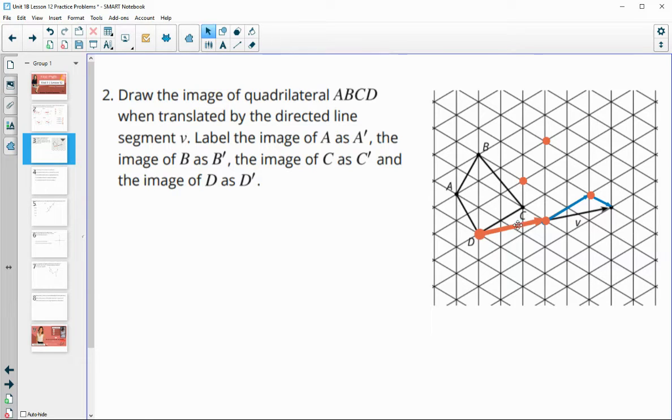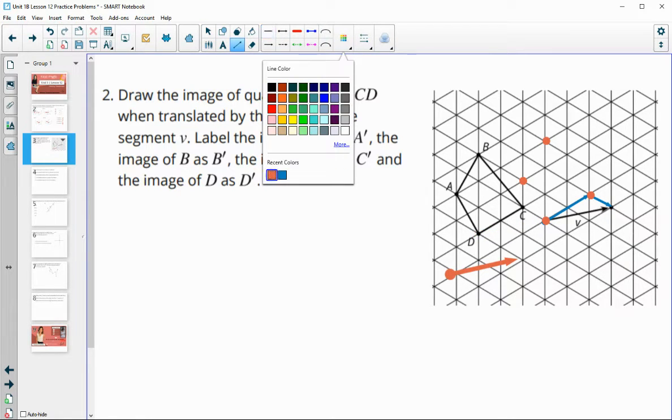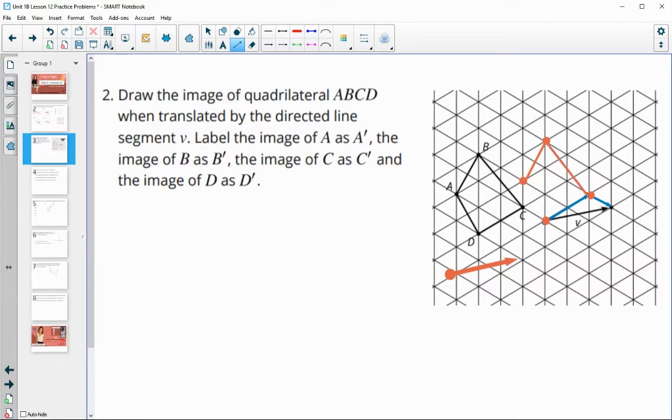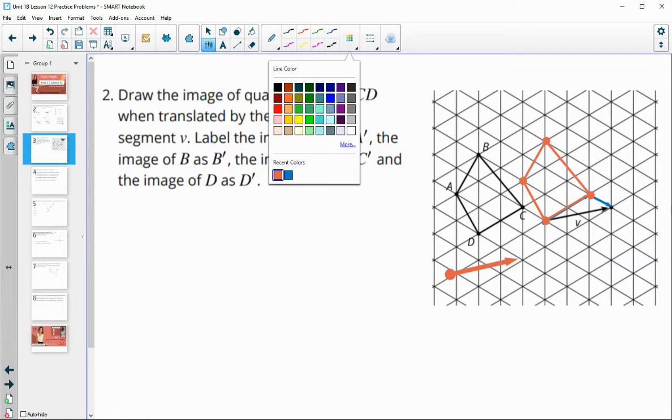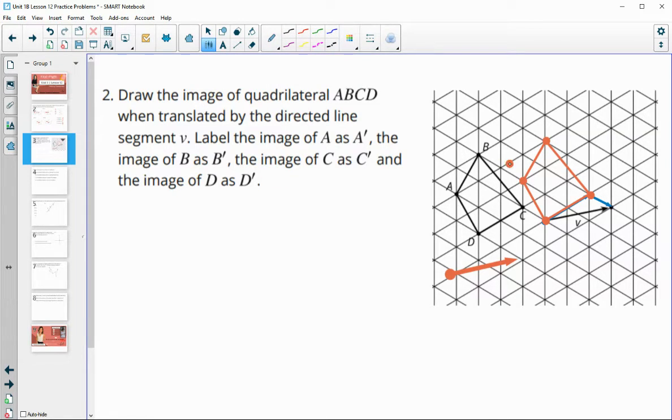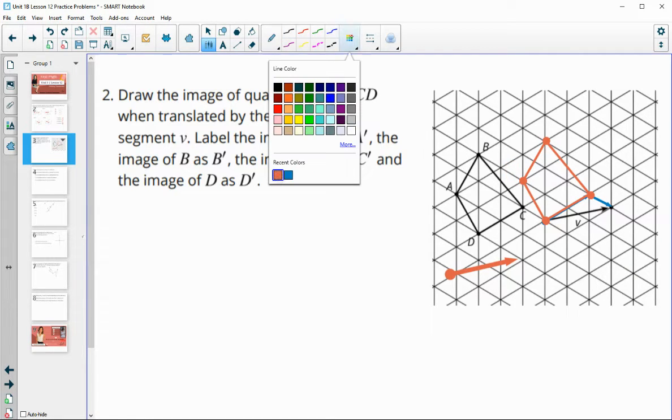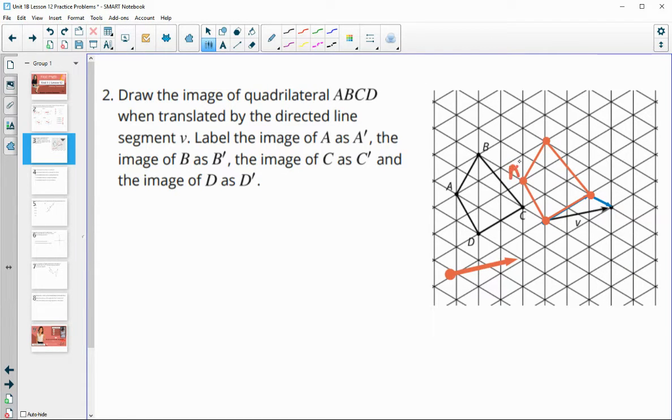So then I'm just going to connect these here and then label them. So here would be our new quadrilateral. And remember the quadrilateral should stay congruent to the original one. So the image should be the same size as the original one. Nothing should look like it really changed. Just the position of it. All right. So here was A prime, B prime, C prime, and D prime.